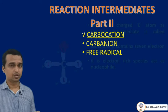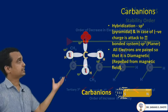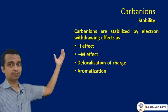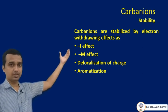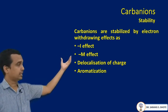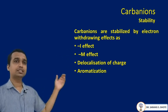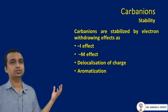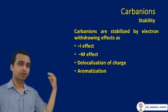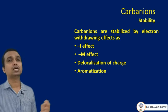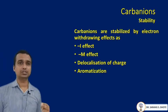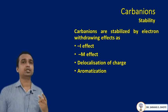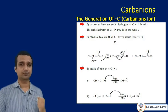The stability of a carbanion is decided by several factors: the minus inductive effect (−I effect), negative mesomeric effect, delocalization of charge — the more the delocalization of negative charge, the more stable the compound — and aromatization. These are the factors which decide the stability of a carbanion.